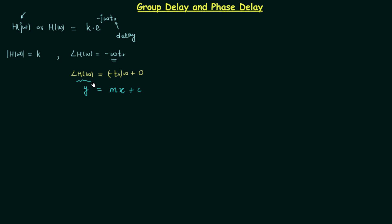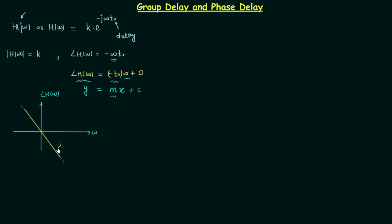Y equals the phase of H(ω) and X equals the angular frequency ω, so we are plotting the characteristics between the phase of the transfer function and angular frequency ω. Here M is the slope and it is equal to minus T0. The slope is negative, so we have a negative-slope characteristic, which we already saw in the last lecture. The slope equals the first derivative of the phase of H(ω) with respect to ω.